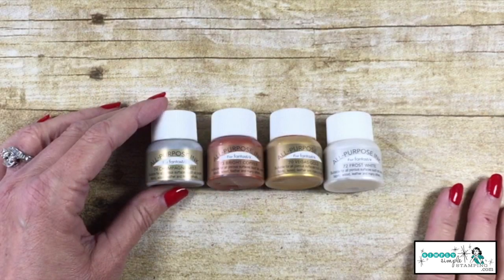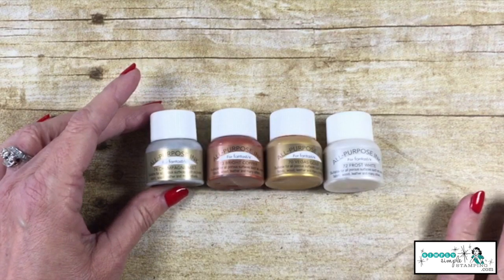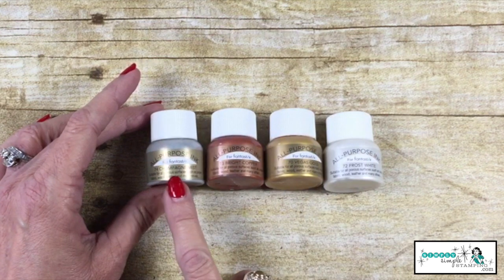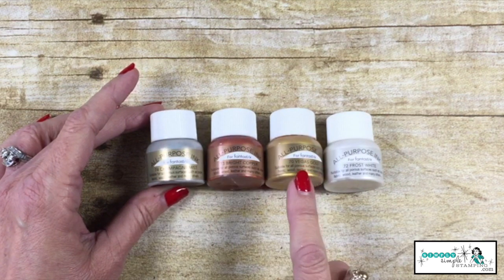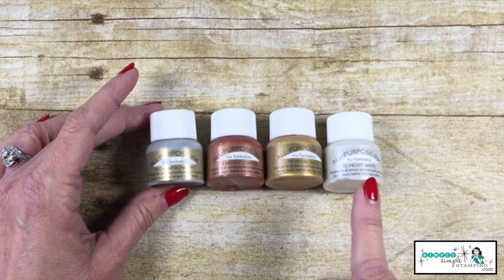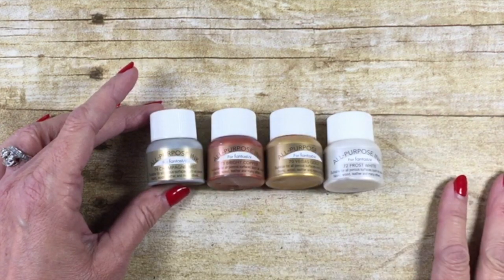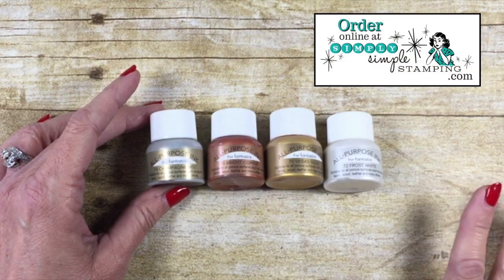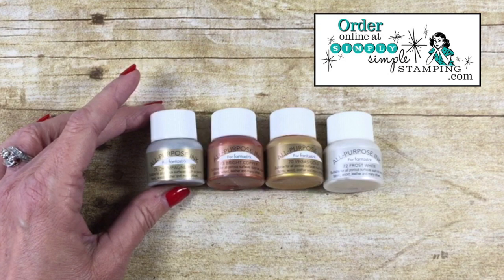Guys, I just can't speak highly enough of shimmer paint and how much fun it is to create. It comes in four colors. Champagne mist, the bright copper, Vegas gold, and frost white. Now you can find all of these at simplysimplestamping.com. You can order those directly from my website.